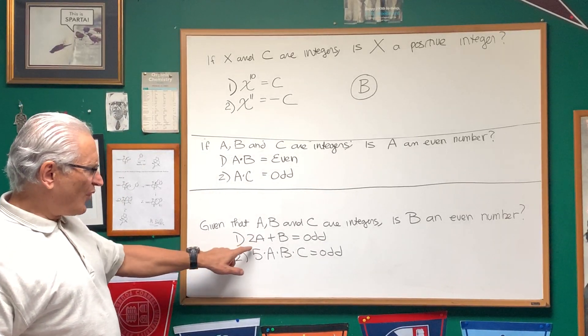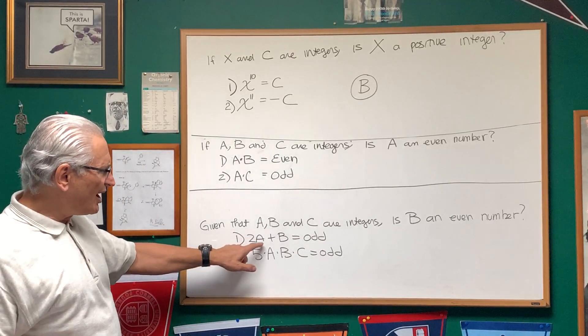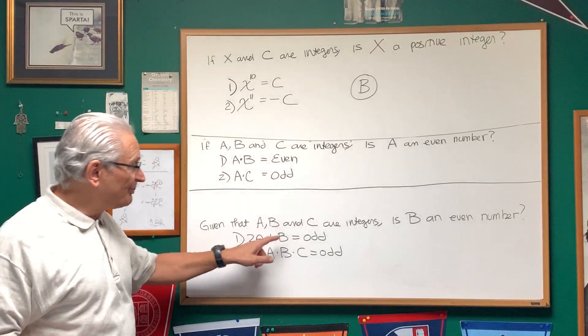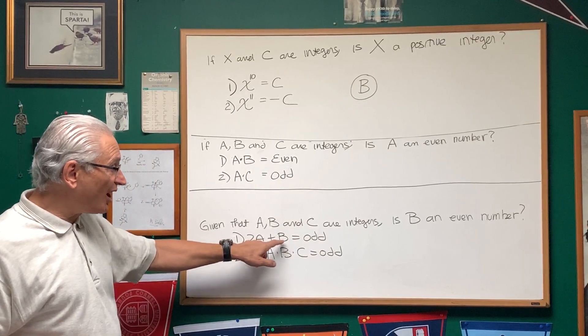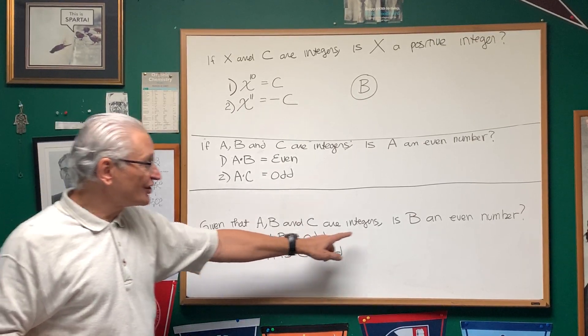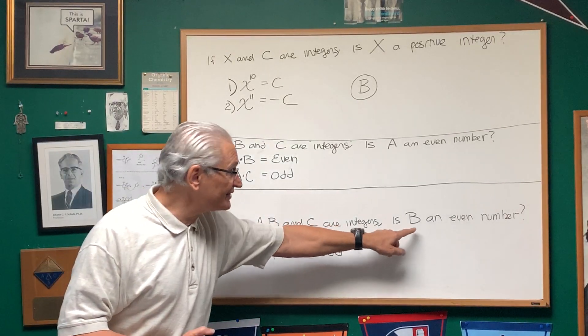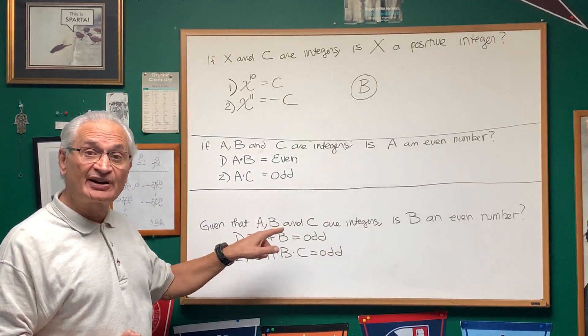What do we know from statement one? I know that two times A has to be an even value. An even value plus what gives us an odd value? Well, even plus odd gives us odd. So I can determine from statement one alone that B is not an even number, that B has to be an odd number.